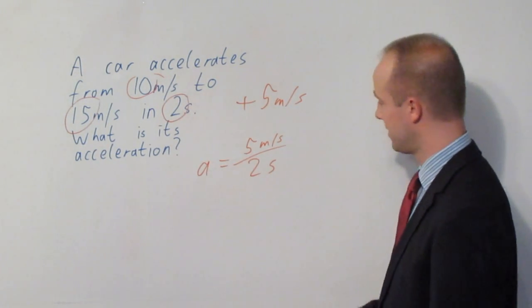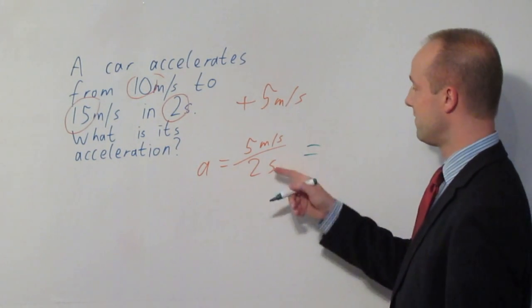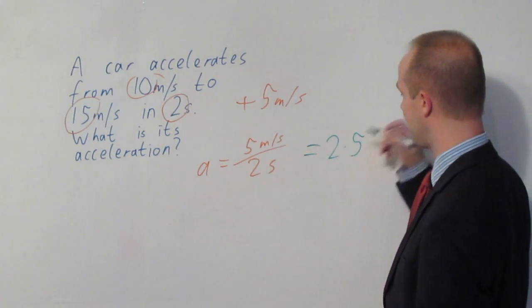When you work this out, and hopefully you've already been wondering what the answer is in your heads, but when you work that out, 5 divided by 2 comes out as 2.5.